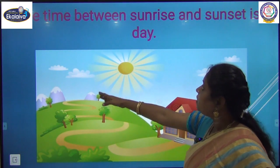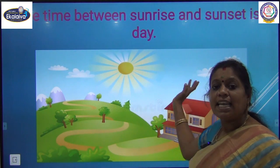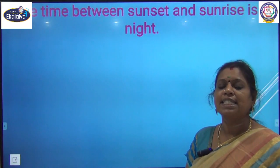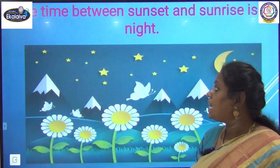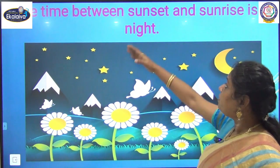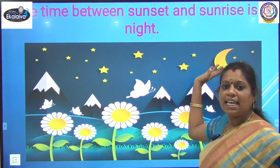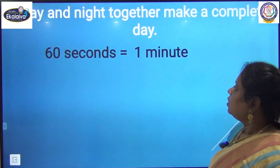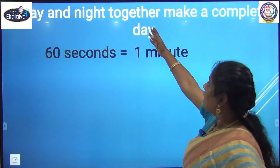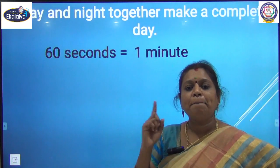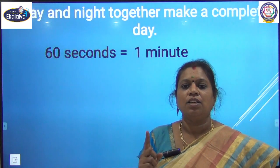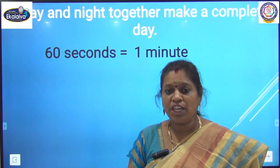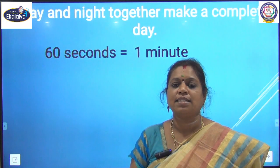The part which does not face the sun has the night. So the time between sunrise and sunset is the day, and the time between sunset and sunrise is the night. Day and night together make a complete day — that is 24 hours.